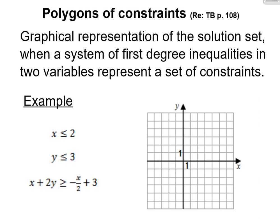Today we're going to talk about polygons of constraint. A polygon of constraint is a graphical representation of a solution set when a system of first-degree inequalities in two variables represents a set of constraints. A polygon is a shape with many sides, and we're going to create shapes with many sides that have different constraints.